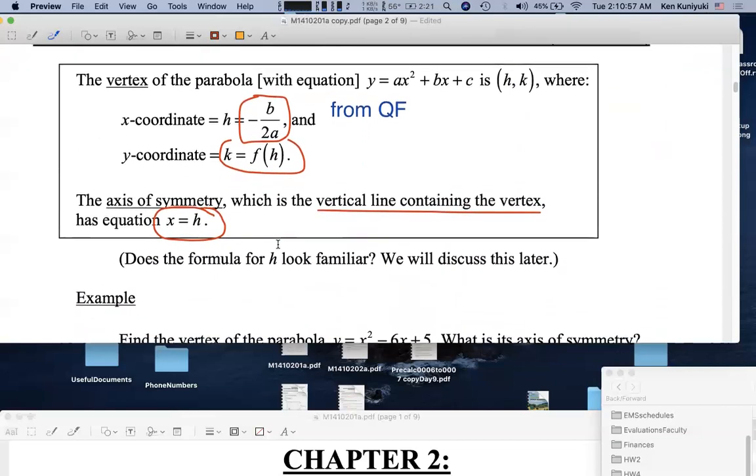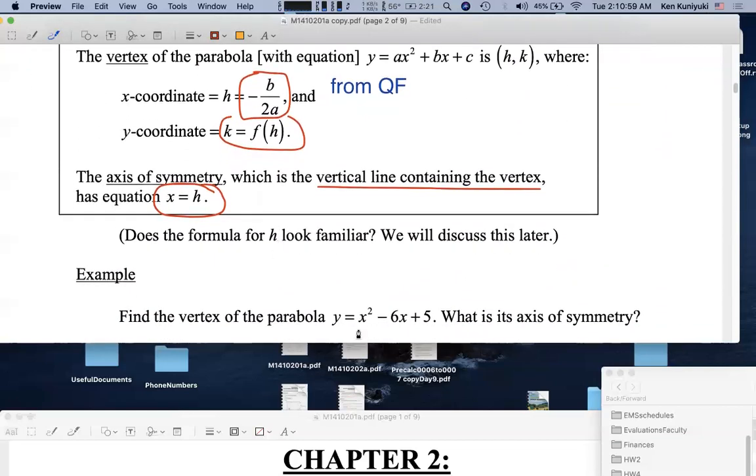Example. Consider the parabola given by y equals x squared minus 6x plus 5. Find the vertex and find the axis or axis of symmetry.